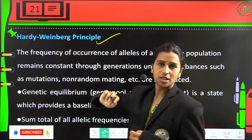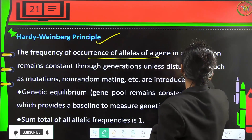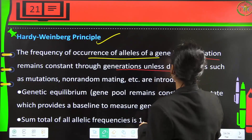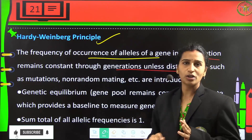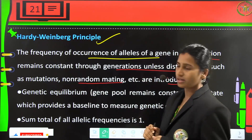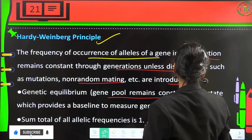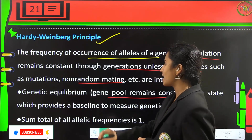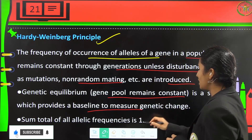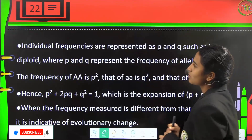The Hardy-Weinberg principle states that the frequency of alleles of a gene in a population remains constant through generations unless disturbances like mutation or non-random mating are introduced. Genetic equilibrium, where the gene pool remains constant, provides the baseline to measure genetic change. The sum total of allelic frequencies is 1.